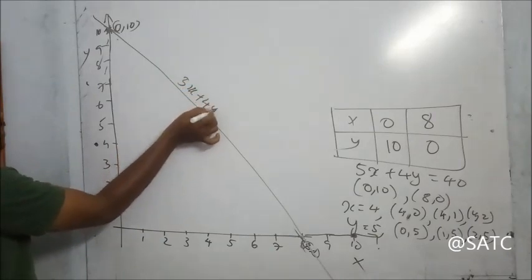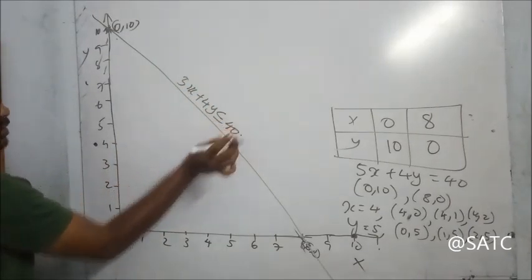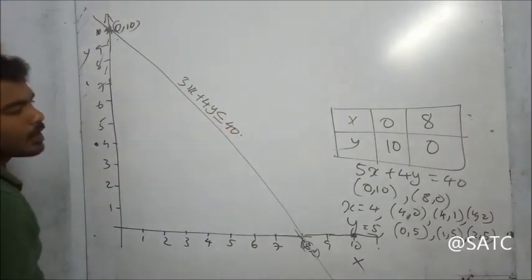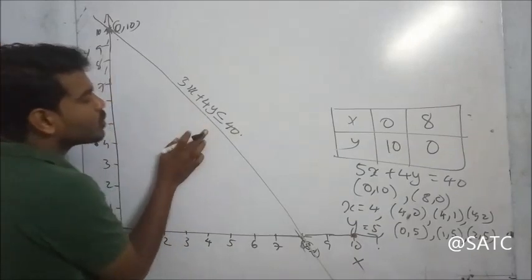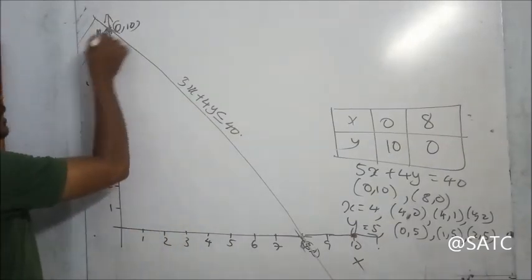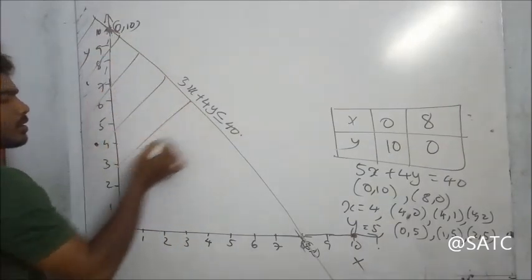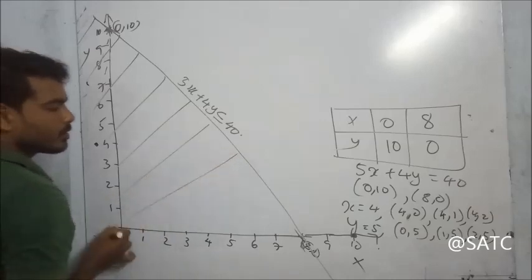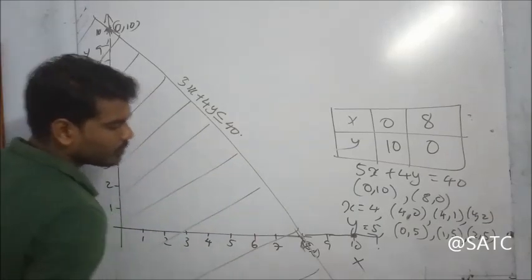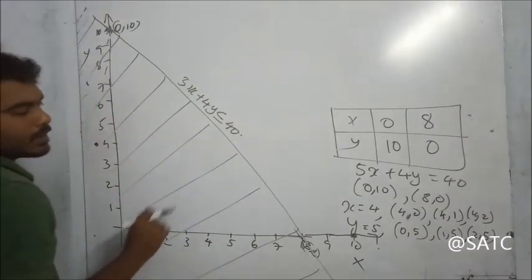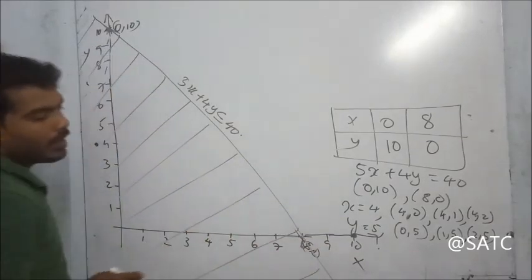We draw 5x plus 4y equal to 40. The shading region is drawn accordingly. And x equal to 4 is a vertical line parallel to the y-axis.